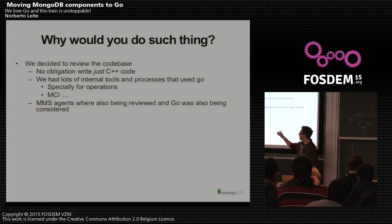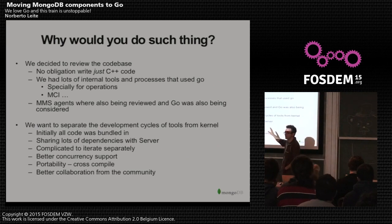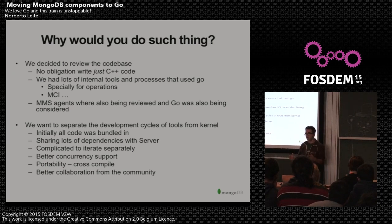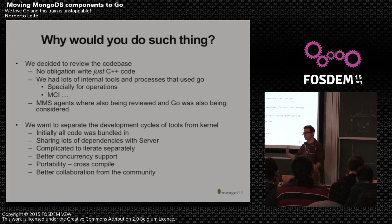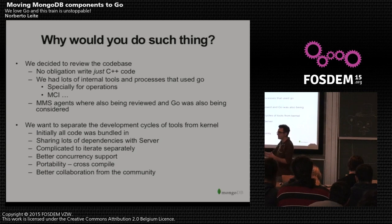We also needed to separate ourselves from the development cycles of the kernel. So if MongoDB 3.0, which is about to be launched, takes like six months to build, if the tools team needs to wait for something to change somewhere deep nested in the kernel, that creates a lot of lag between what we want and what we can achieve. This was creating a lot of problems when we wanted to bug fix, correct, improve. So we needed to separate ourselves from the kernel team - those guys are slow, we are faster.